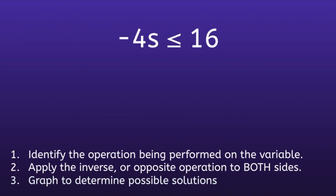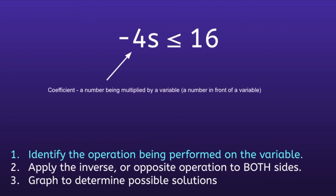Example 2. Negative 4s is less than or equal to 16. Step 1: Identify the operation being performed on the variable. In this inequality, the variable is s. The number in front of the variable is called a coefficient — a number being multiplied by a variable. So s is being multiplied by negative 4.